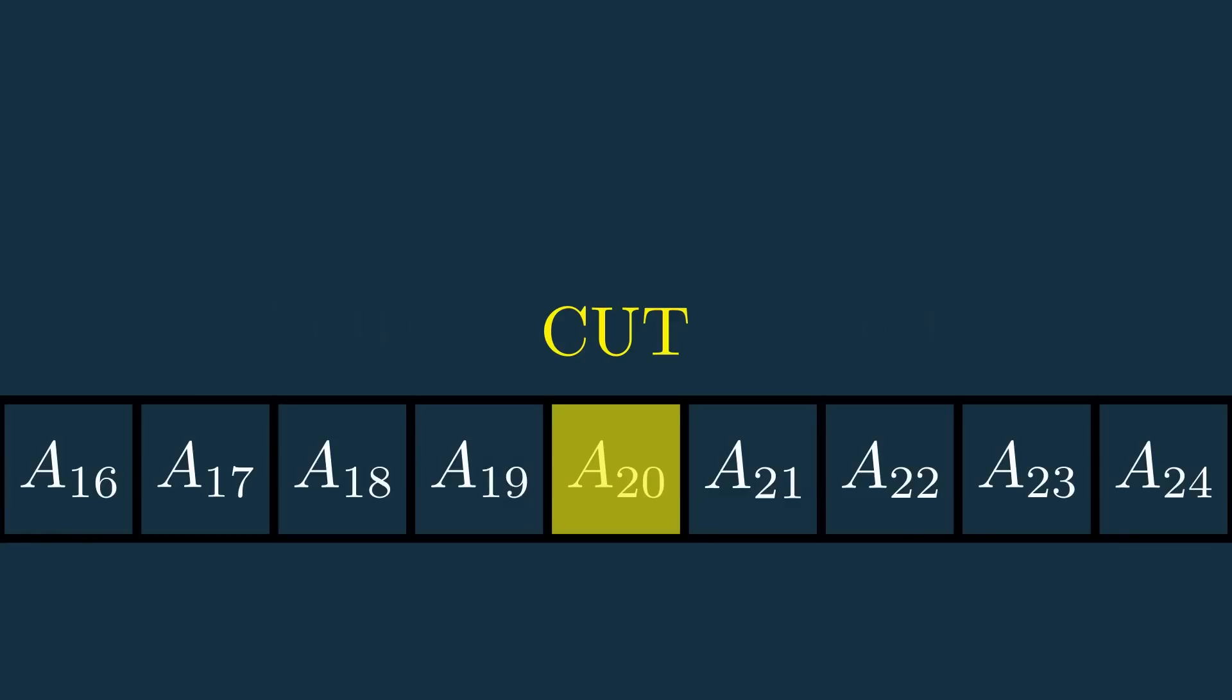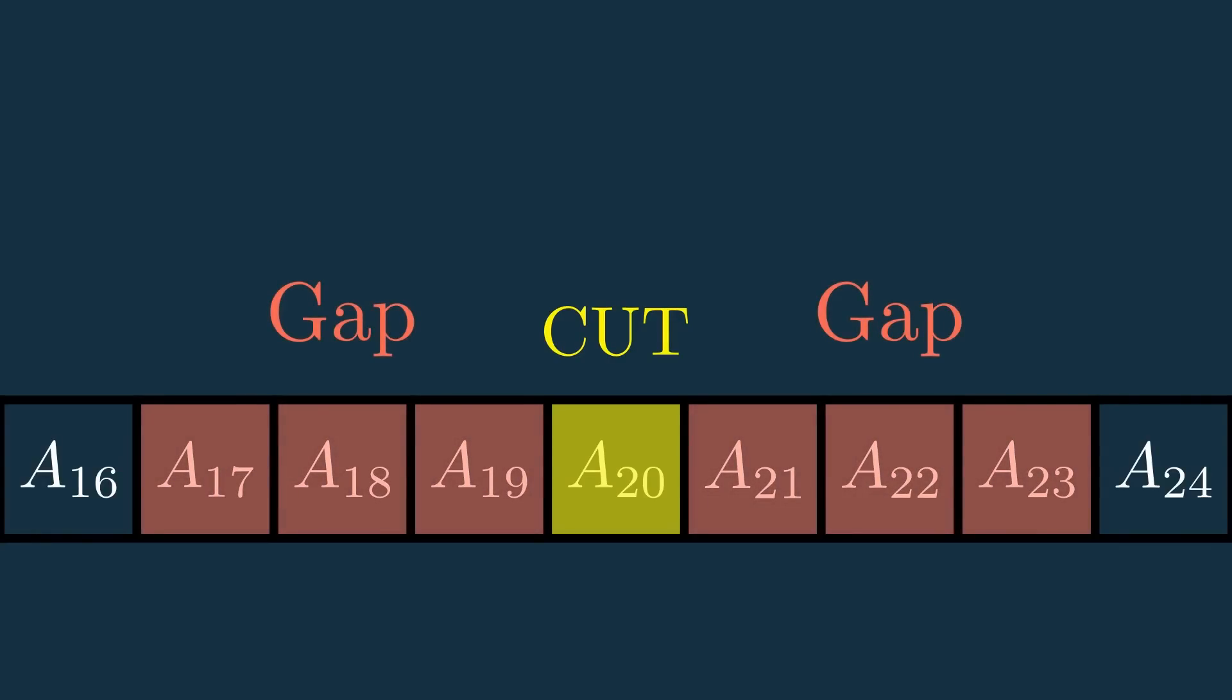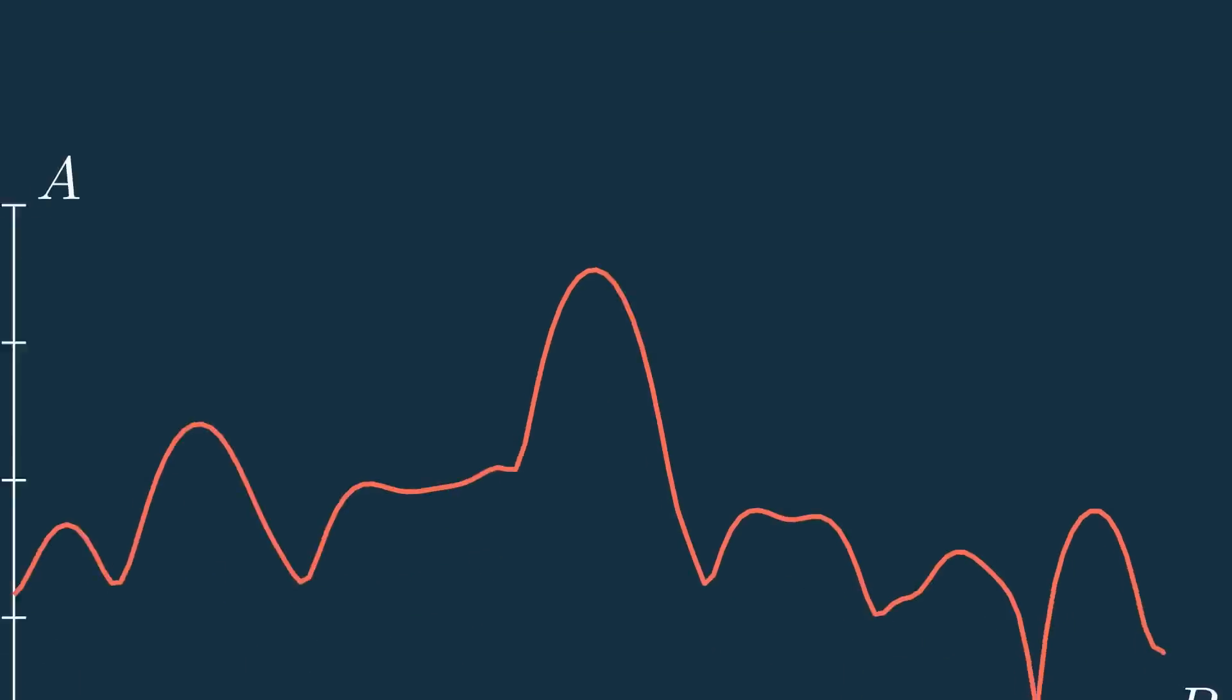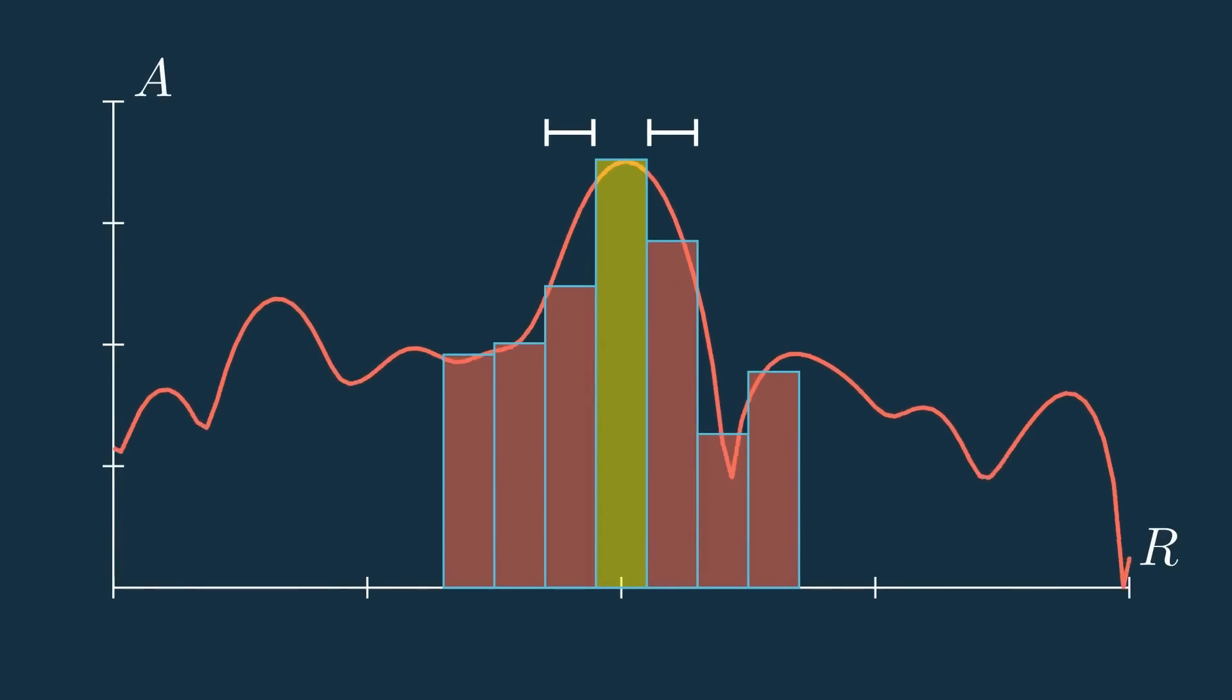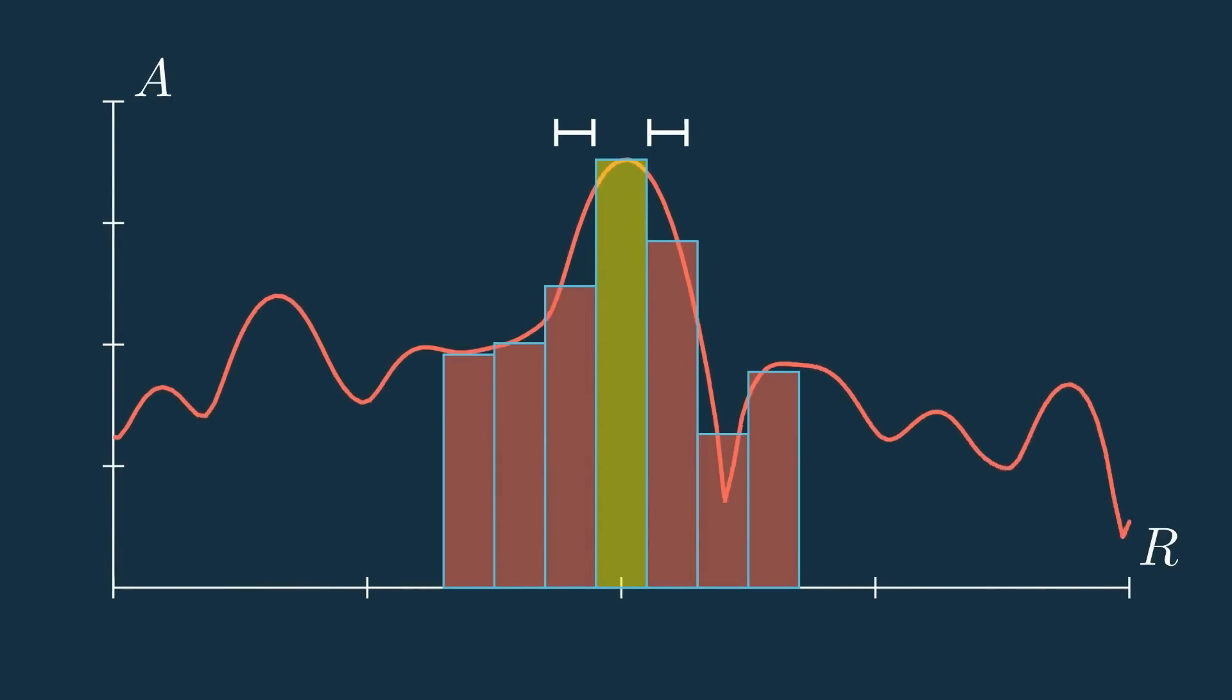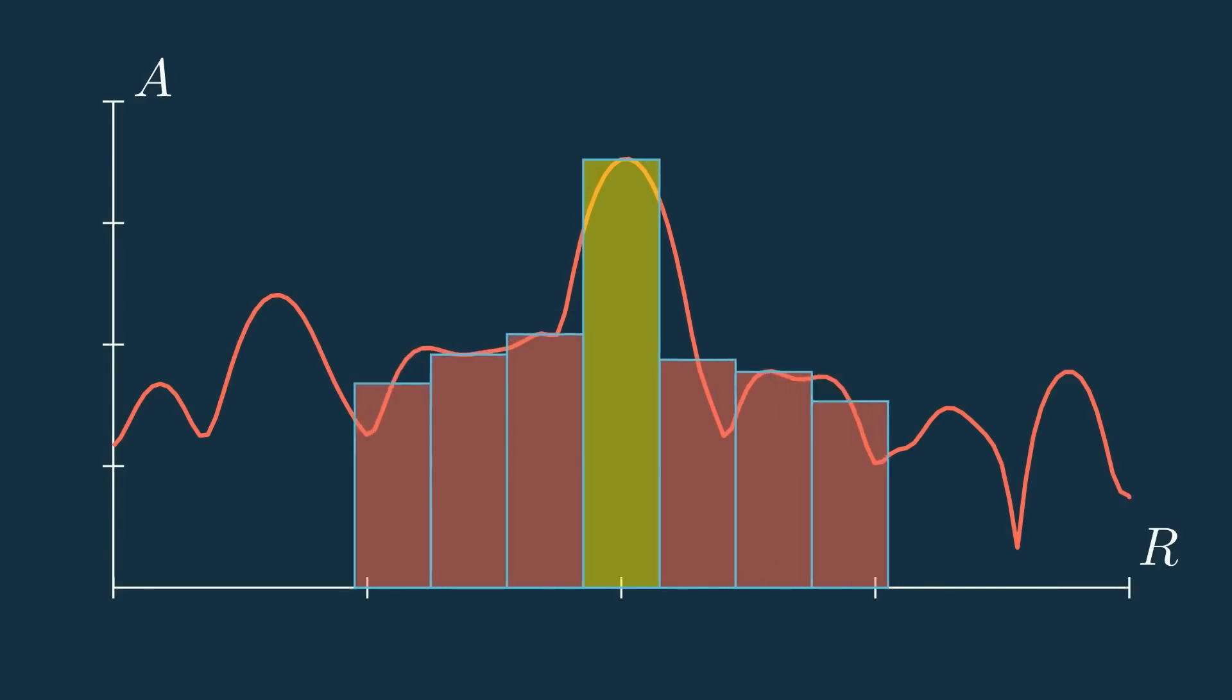We then want to include a few cells surrounding the CUT, called the gap cells, that will be ignored in the threshold calculation. The reason for this is that the target has some width like I talked about at the beginning of the video, and if we didn't include the gap, the target's width outside of what's included in the CUT would influence its own threshold, which we don't want. So we add this gap with a cell count that depends on how big we expect the targets to be, and how fine our range resolution is.